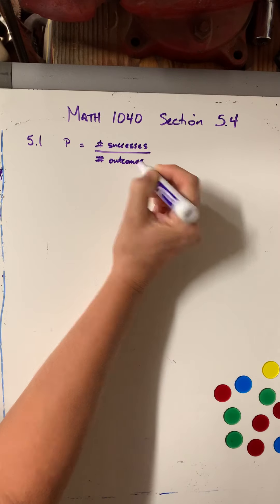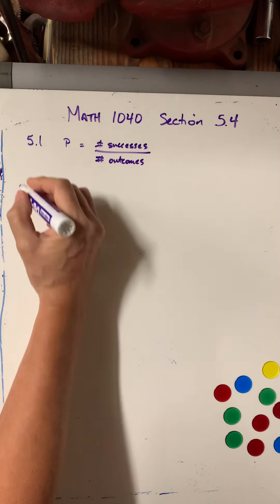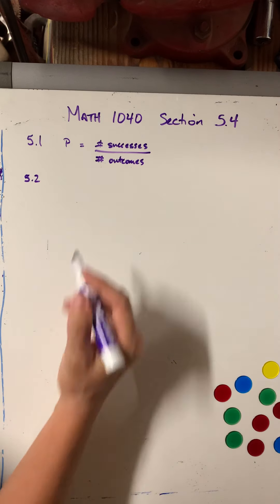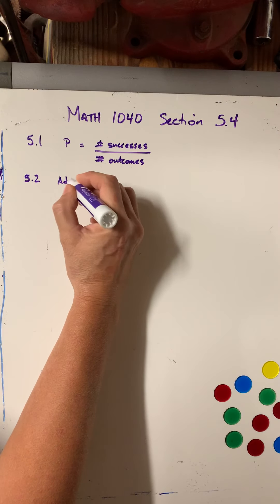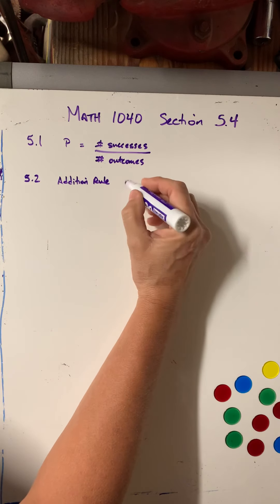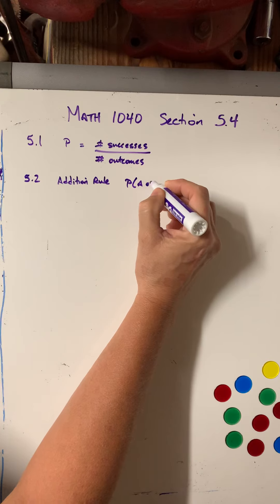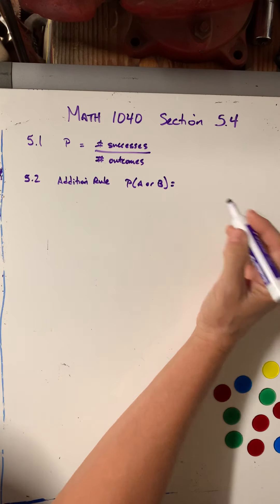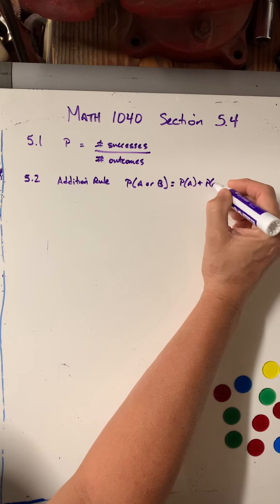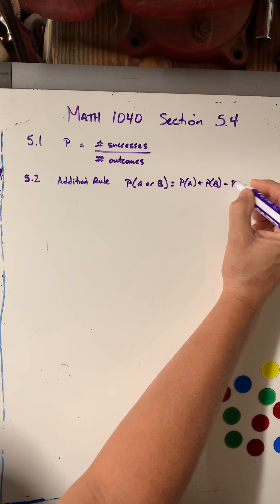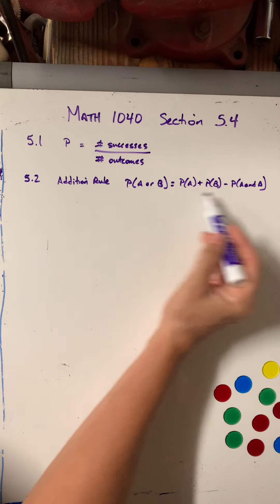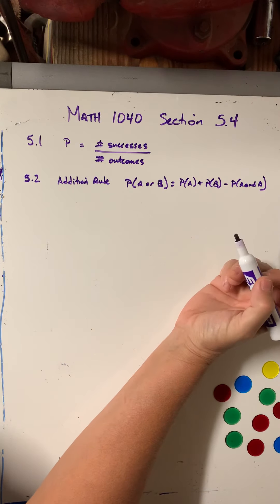Most of you didn't have too much trouble with that. And then we extend that in 5.2 to do what we call the addition rule, where if I have the probability of A or B, then the formula is the probability of A plus the probability of B minus the probability of A and B. And this had to do with a single event.